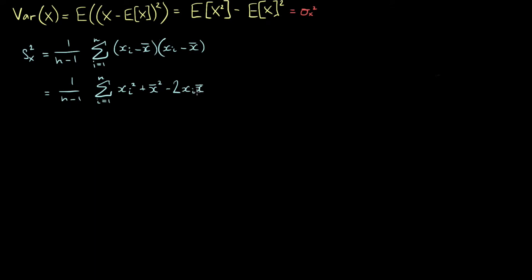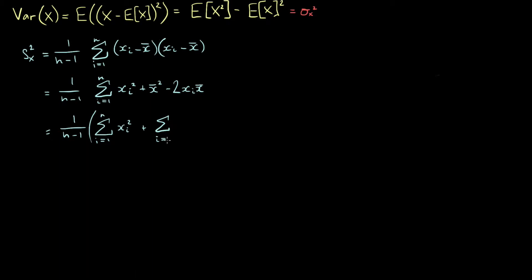We've expanded the brackets. Now we apply this sum separately to each of the terms. The first term gives us 1 over n minus 1 times the sum from i equals 1 to n of xi squared — we can't really simplify this, it's just our data squared. The next term is the sum from i equals 1 to n of x-bar squared.